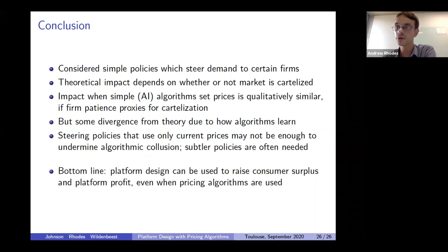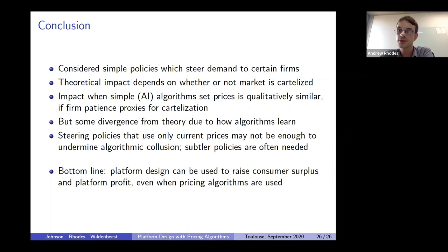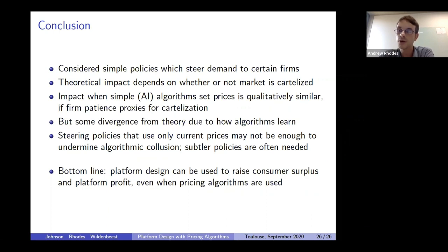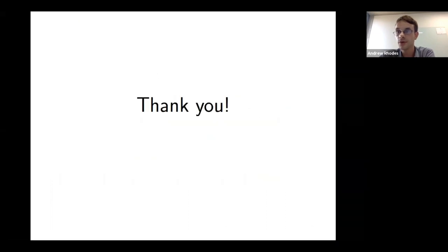To wrap up: we've considered two very simple policies which steer demand to certain firms. In theory, the effect depends on whether or not the market is cartelized. In simulations, results are broadly consistent with theory, but there are interesting differences, especially relating to how algorithms learn compared to how we derive theory results. Very simple steering policies depending only on current prices may not be enough to undermine algorithmic collusion — subtler policies might be needed. Nevertheless, we believe these results are a proof of concept that platform design can be used to raise consumer surplus and also platform profit, even when algorithms are being used, irrespective of whether those algorithms lead to more or less competitive outcomes.